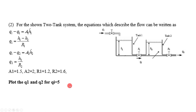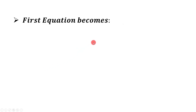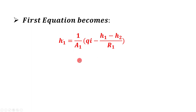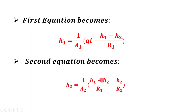We have to use MATLAB Simulink to solve it, and as you can see here we have a1, a2, r1, r2 that we have to define in MATLAB. But before going to MATLAB we have to rearrange these equations and solve for h1_dot and h2_dot. The first equation becomes, after solving for h1_dot, as you see here, and the second equation will be like this.